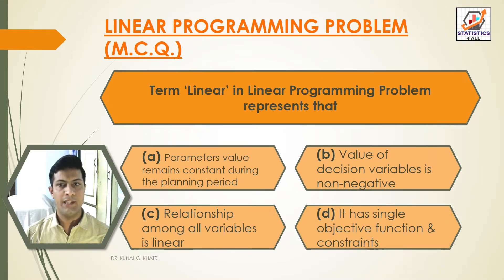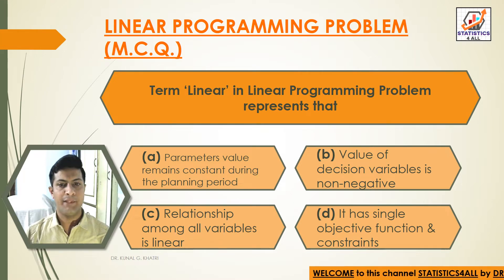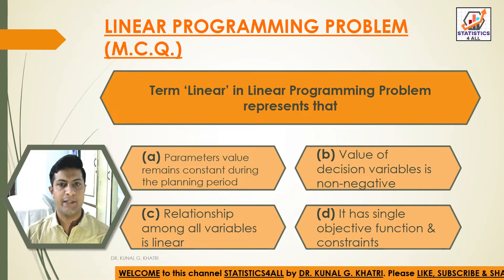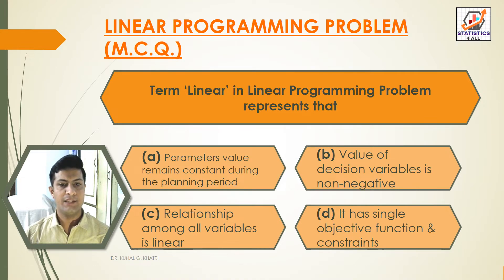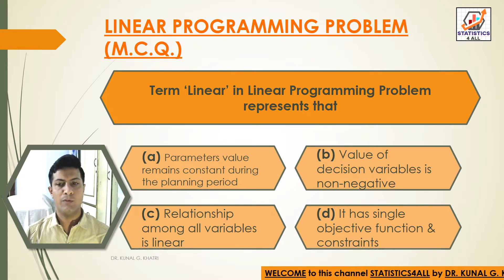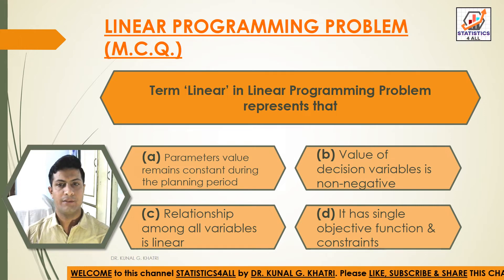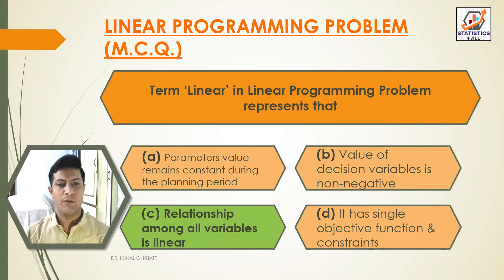Question 2: The term 'linear' in linear programming problem represents that — Option A: Parameter's value remains constant during the planning period. Option B: Value of decision variables is non-negative. Option C: Relationship among all variables is linear. Option D: It has single objective function and constraints. Answer: Option C — Relationship among all variables is linear.